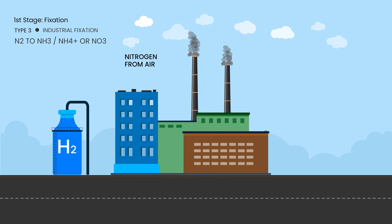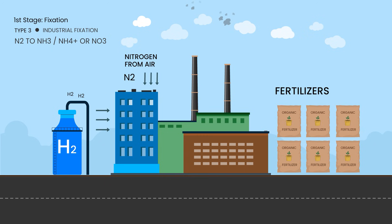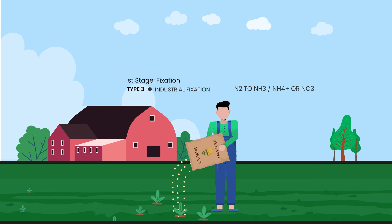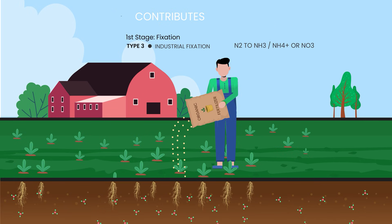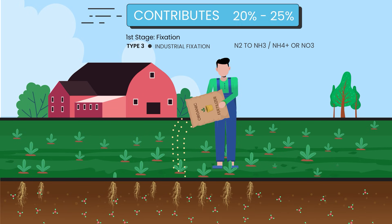Finally, there's industrial nitrogen fixation. Humans replicate this process by combining nitrogen gas from the air with hydrogen to create ammonia for fertilizers. These fertilizers add nitrogen compounds to the soil, boosting its fertility. Industrial fixation contributes around 25% of nitrogen fixation today, largely due to human activity.